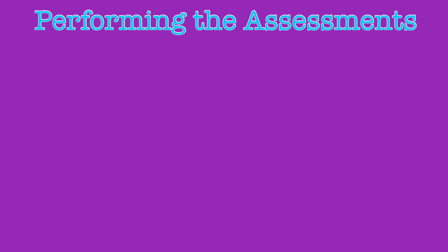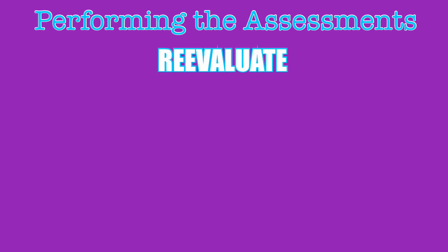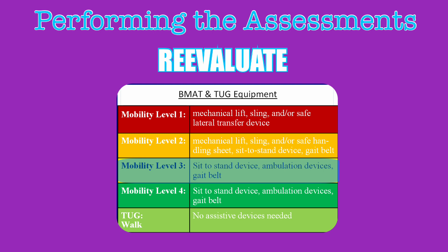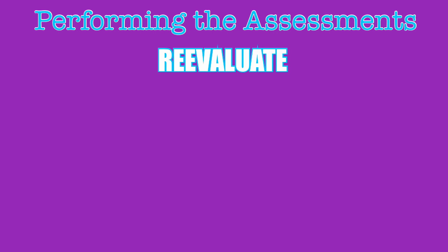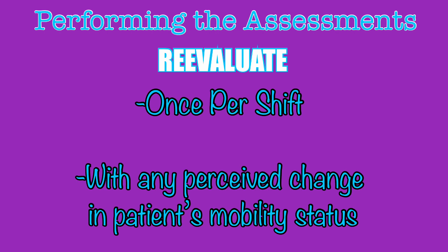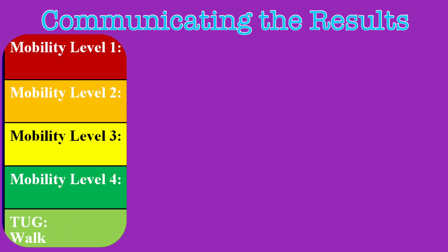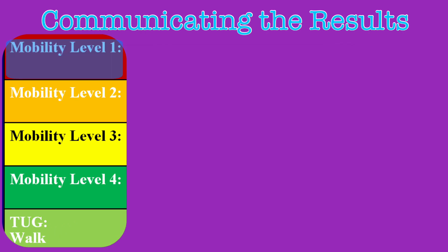Once you've successfully completed your BMAT and TUG assessments, you're not done — reevaluation is crucial. Hopefully, we're helping patients advance to higher levels of mobility. If we see improvement or regression, we always need to be able to adjust our interventions accordingly to keep everyone safe and provide the best care possible. Reassessment is required at least once per shift and whenever there is a perceived change in the mobility status of a patient. We also still need to ensure good communication to the care team. A huge part of this is the standardization of the verbiage, which is already included in the assessment bundle. We identify patients as mobility level 1, level 2, level 3, level 4, or TUG independent.